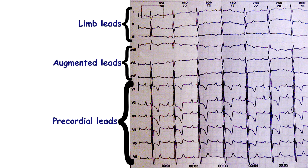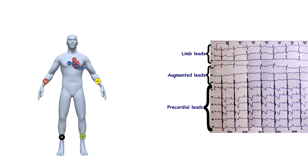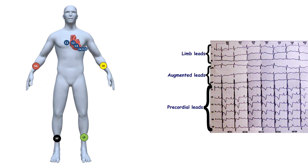A 12-lead ECG consists of 3 limb leads, 3 augmented leads, and 6 precordial leads. Limb leads and augmented leads are recorded using only limb electrodes. Precordial leads require both limb electrodes and precordial electrodes. Leads are printed on a specific paper with a grid.